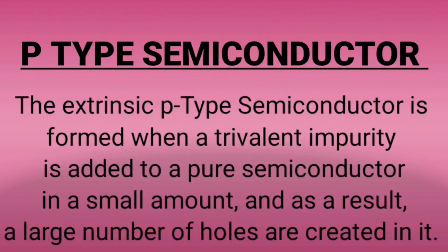The P-type Semiconductor is formed when a trivalent impurity is added to a pure semiconductor in a small amount, and as a result, a large number of holes are created in it.